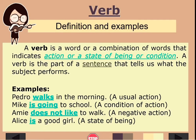A verb is a word or combination of words that indicates action, state of being, or condition. These are words that show action or movement, and they can also show a condition of something or an event. A verb is the part of a sentence that tells us what the subject performs — it tells us what the subject is doing.